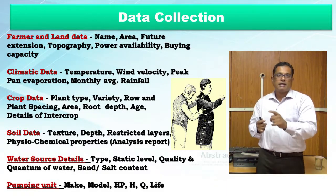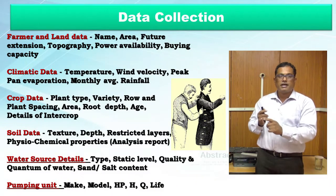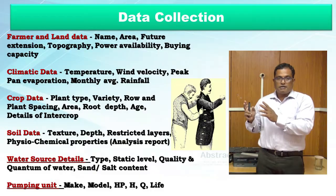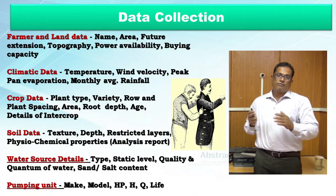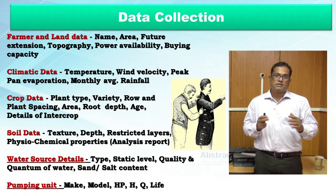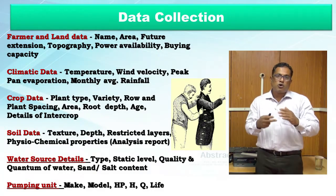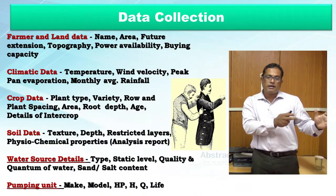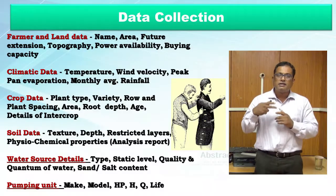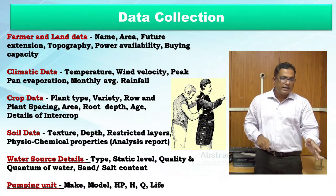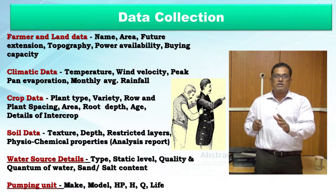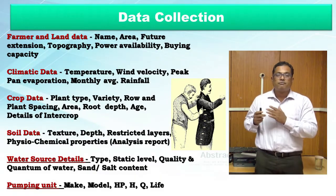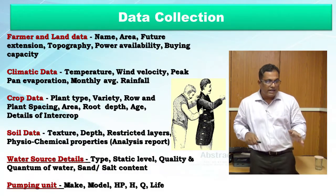If water quality is good, there may be no requirement for a sand filter or pre-filter. But if quality is poor, you need a hydrocyclone pre-filter, then a media filter, then a screen filter. If a farmer has good water quality, there is no point in advocating for a sand filter — this is one way to reduce the overall cost of the drip irrigation system.